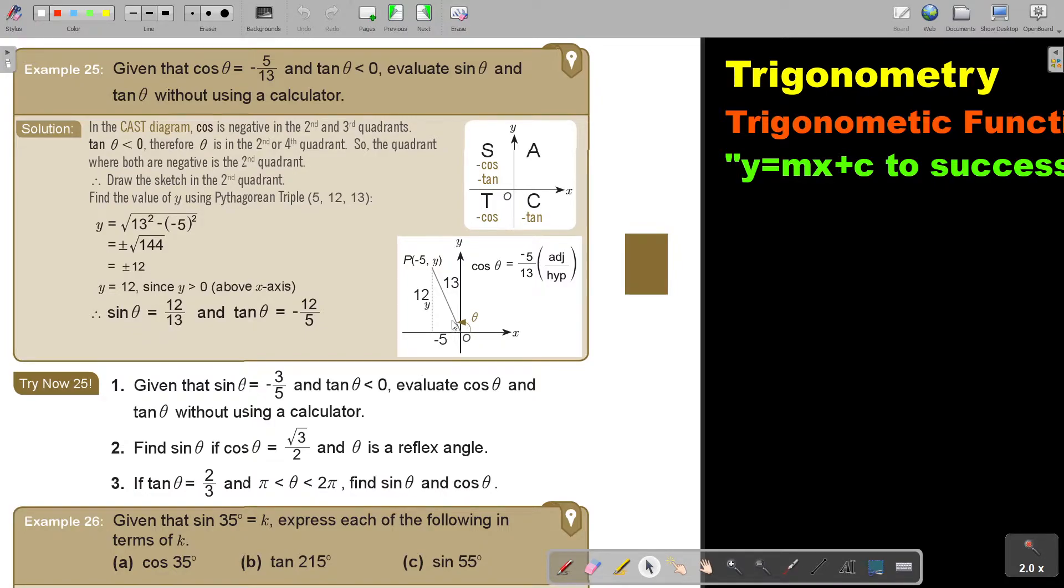Okay, and then for sin, now I just work it out. Sin is opposite over hypotenuse and tan is opposite over adjacent. Easy.